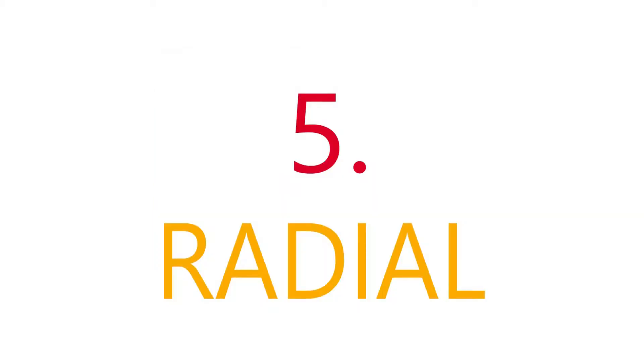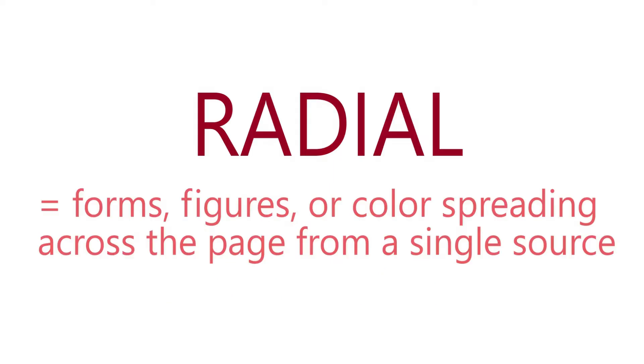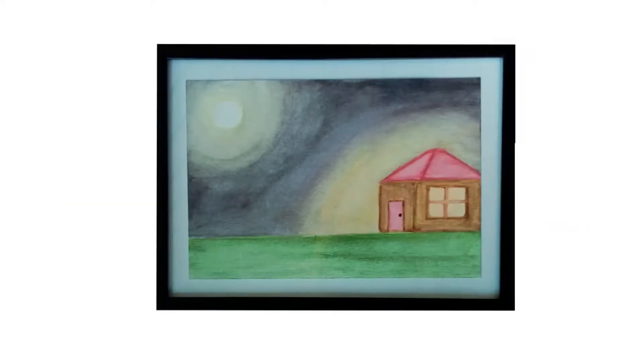And fifth are radial compositions. In a radial composition, forms, figures, or color spread across the page from a single source.